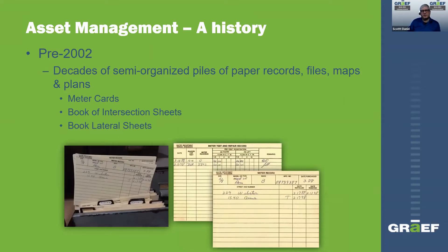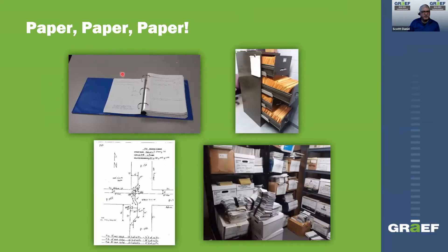Before 2002, the water utility managed everything with paper records, which is probably very similar to a lot of municipalities in the United States. Everything they had was on paper — paper files, maps, plans, all in file cabinets. Some of those things were kind of scattered all over the place. They used water meter cards, and intersection sheets and lateral sheets were all created and stored in three-ring binders like this one.